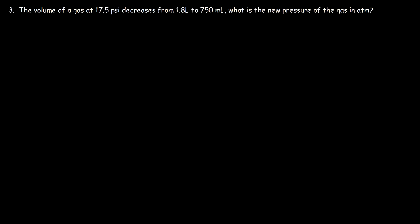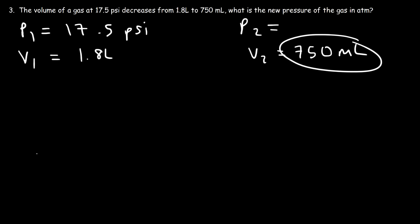Now let's work on this last question. The volume of a gas at 17.5 psi decreases from 1.8 liters to 750 milliliters. What is the new pressure of the gas in atm? So right now P1 is 17.5 psi, in pounds per square inches. So when we get our answer for P2, it's going to be in the same unit, and then later we can convert it to atm. V1 is 1.8 liters. But V2 is in milliliters. So we need to make sure that these two match. So I'm going to convert milliliters into liters.